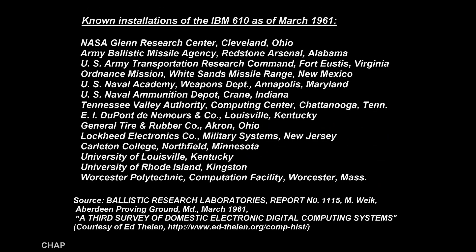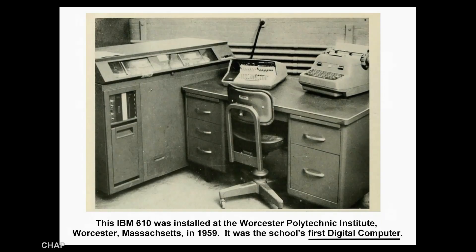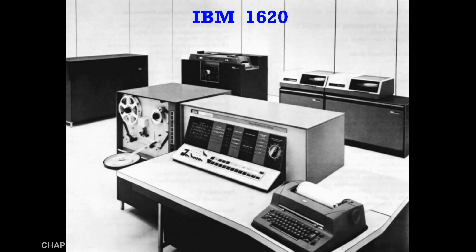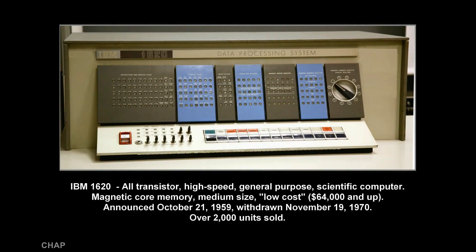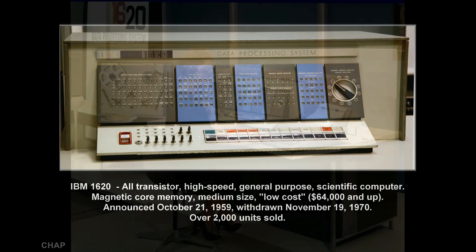Users of the 610 machine included the following. IBM's 1620 computer, introduced in October 1959, was generally considered a replacement for the IBM 610. The 1620 stayed in production until November 1970.